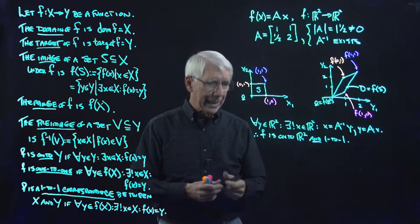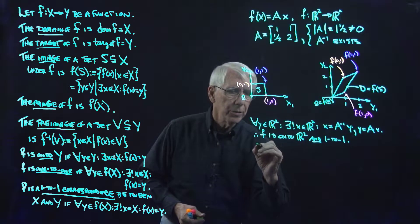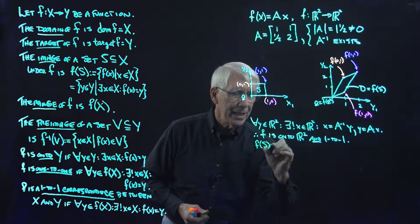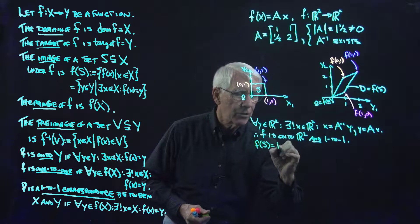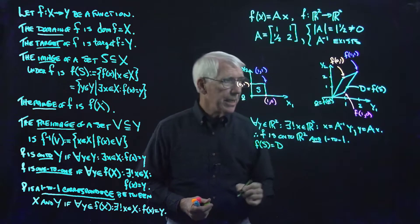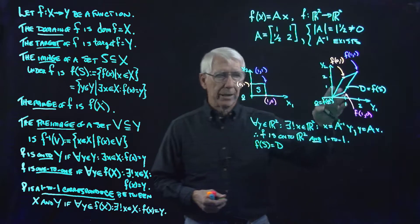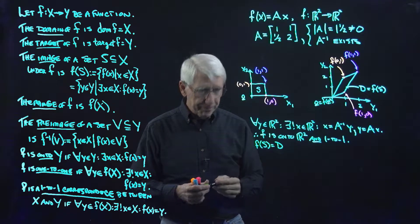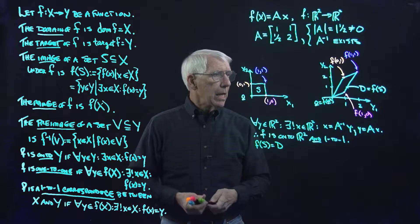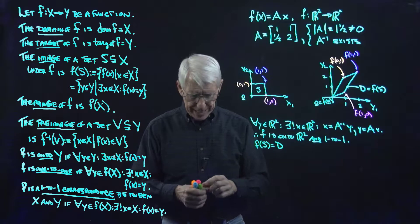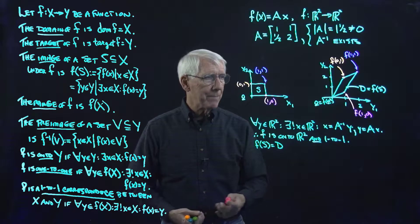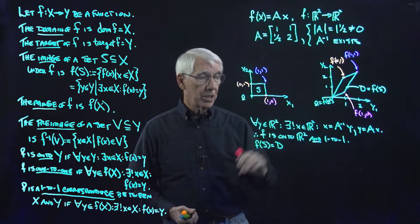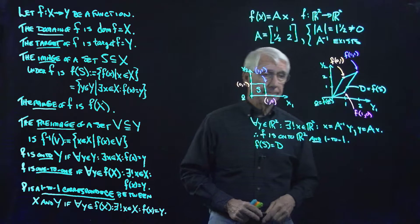According to our definition of the image of a set, the image of a set S — a subset of the domain — is exactly the set of all points in the target space that get hit from points in S. It's the set of all f(x)'s for x's in S, and that's exactly what this is. So the image of the set S is the set I've called D. Let's take a few other sets and see what happens to them.